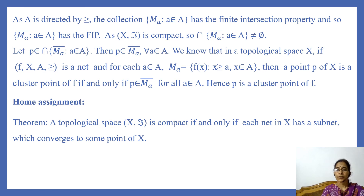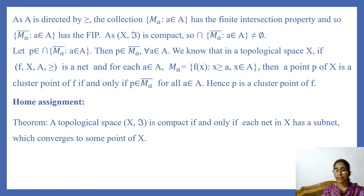As a home assignment, I give you the following related theorem which you can prove easily: a topological space (X, T) is compact if and only if each net in X has a subnet which converges to some point of X. Thank you.